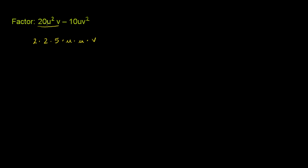And then v is just 1v. So we just rewrote 20u squared v into a product of its smallest components, its most fundamental components - prime numbers and just u's and v's. Now let's do the same exact thing for the 10uv squared. We'll put that minus sign there. 10 is, if we break it down into its prime factors, 2 times 5.